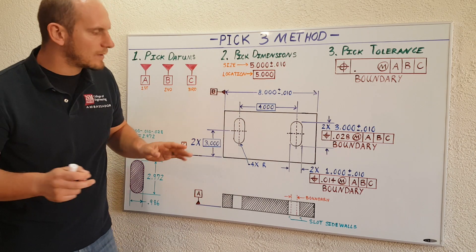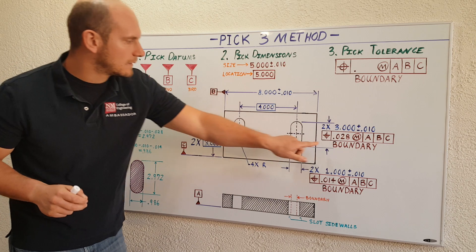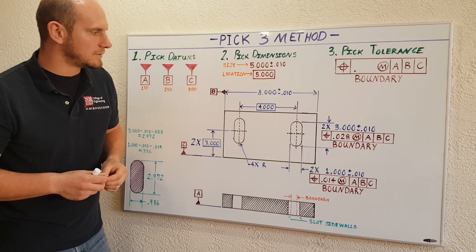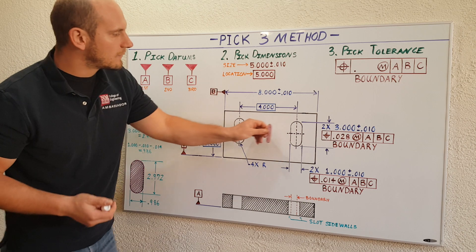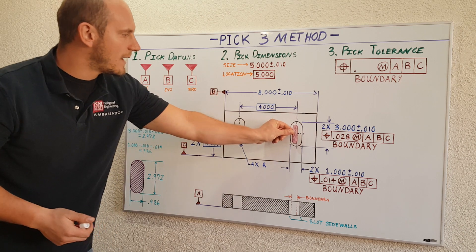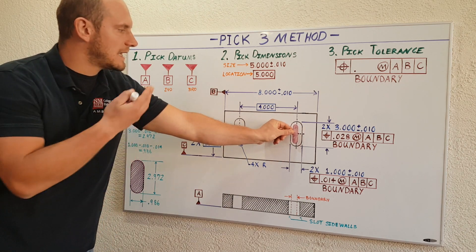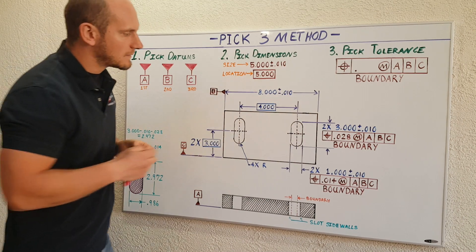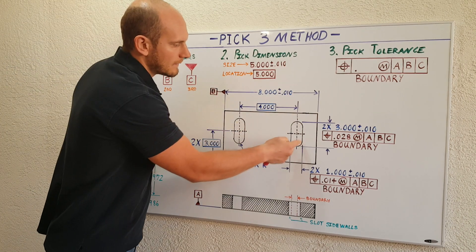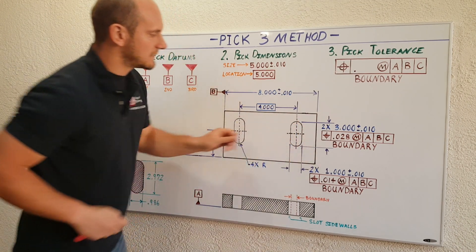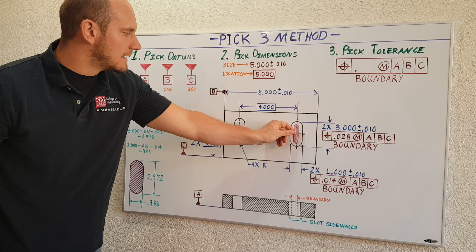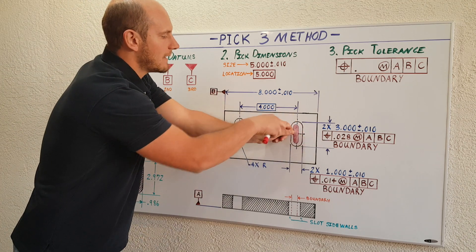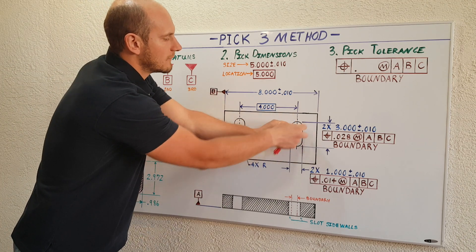Let me quickly explain these boundary terms and how to use GD&T in this situation. What you're doing is you're simply creating an internal boundary area that has the same shape as your slotted feature, so that when these slots are machined, the side wall of these slots cannot invade or violate that internal boundary area.